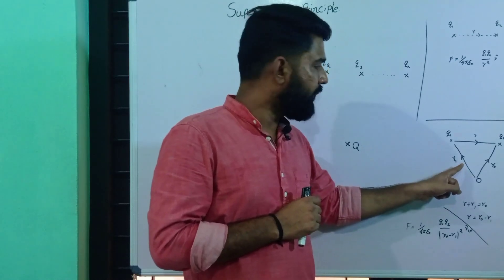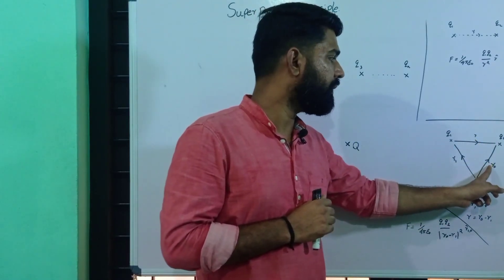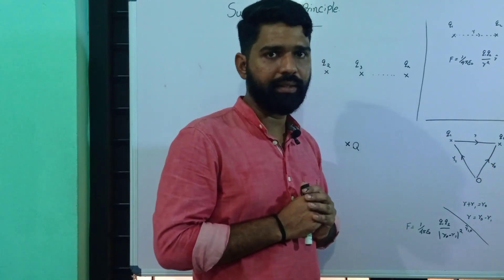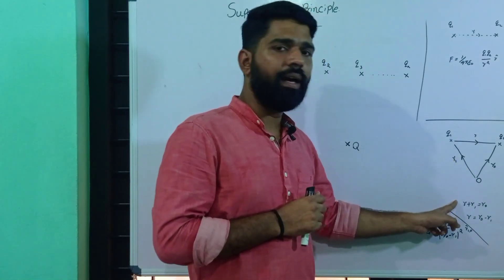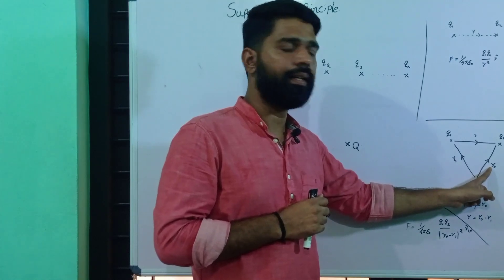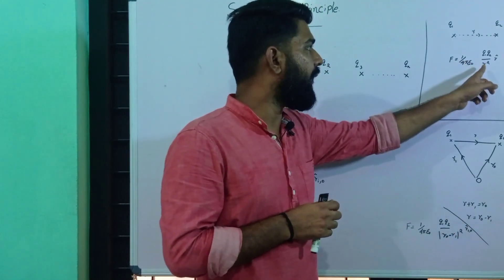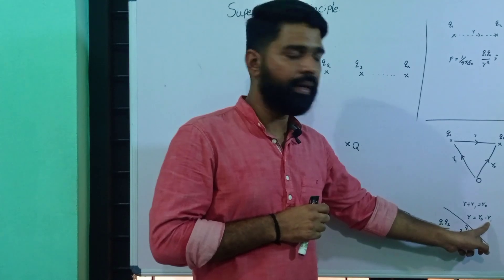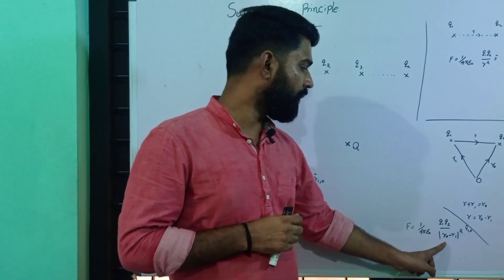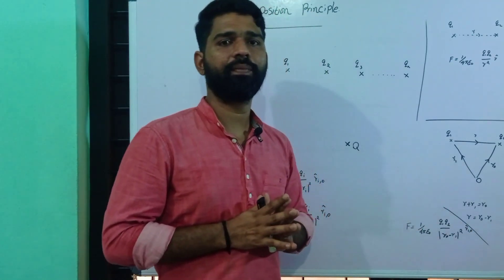Then we can write: R plus R1 is equal to R0, so R is equal to R0 minus R1. That gives the value of R as R0 minus R1. Then this equation becomes: 1 by 4 pi epsilon naught, Q1 Q2 divided by modulus of (R0 minus R1) squared, R-naught cap.